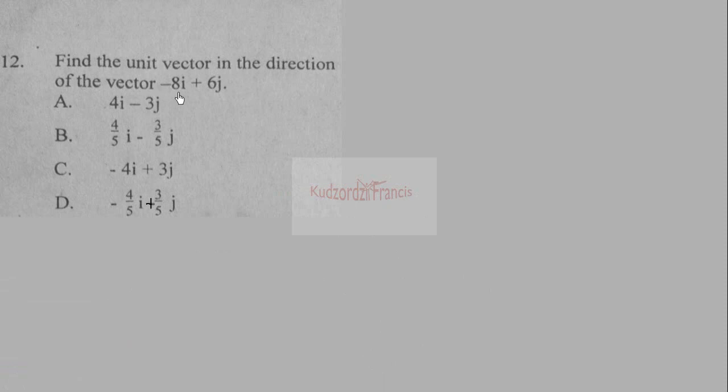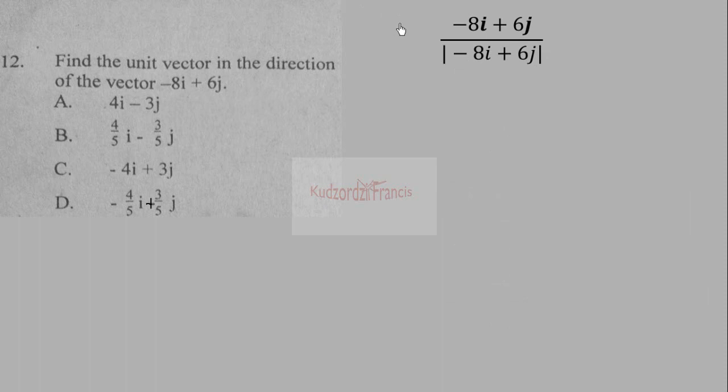Find a unit vector in the direction of the vector −8i + 6j. A unit vector is given by the vector divided by the magnitude of the vector. So the unit vector in the direction of −8i + 6j is (−8i + 6j) divided by the magnitude of that vector.